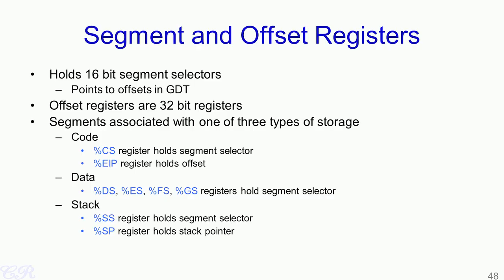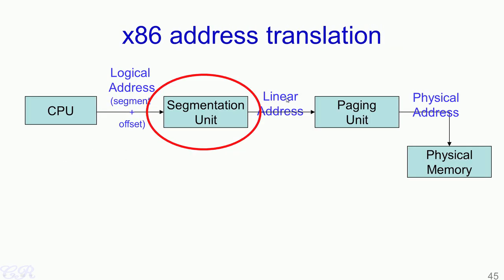Next, let us look at the segment and offset registers in Intel 32-bit machines. The segment selector registers are 16-bit selectors pointing to offsets in the GDT, while the offset registers are 32-bit registers. Quite often the segment selectors are coupled with corresponding offset registers. For instance, to access the code segment we use the CS register as the segment selector and the corresponding EIP register as the offset, known as the instruction pointer. To access the data segment we have several segment registers such as DS, ES, FS and GS. To access the stack segment we have the SS register for the segment selector and the SP register for the stack pointer. All these registers along with the GDTR and the GDT table are used to convert the logical address to a corresponding linear address.